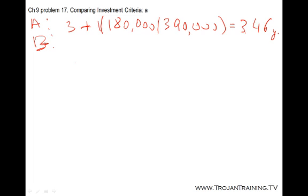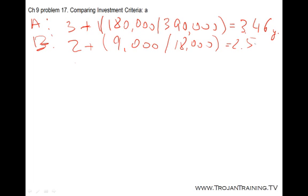For Project B, it recovers itself between 2 and 3 years. So we'll have 2 years plus $9,000 — whatever else we need to recover — divided by the 3rd year cash flow, giving 2.5 years. According to this rule, we should accept Project B because it pays back sooner: 2.5 years versus 3.46 years.